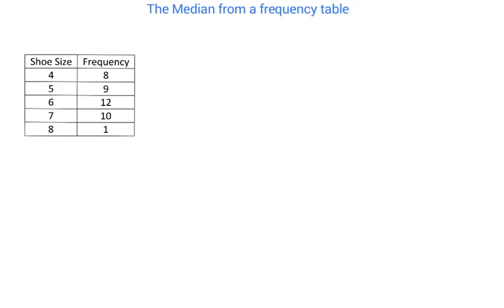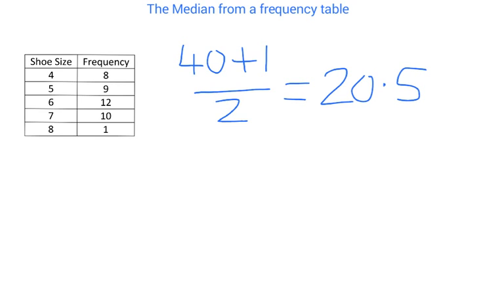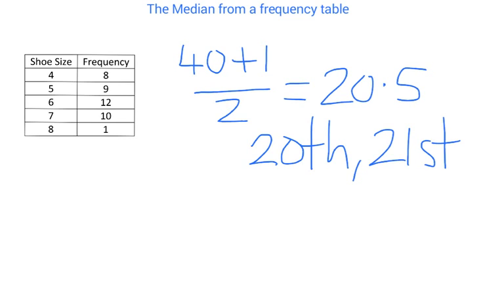Now for the median, which is the middle number when data is in order — the table is already in order. We've worked out there are 40 pieces of information. Because 40 is even there will be two middle values. To find the position we do (40 + 1) ÷ 2 = 20.5. This means we're looking for the 20th and the 21st pieces of information.